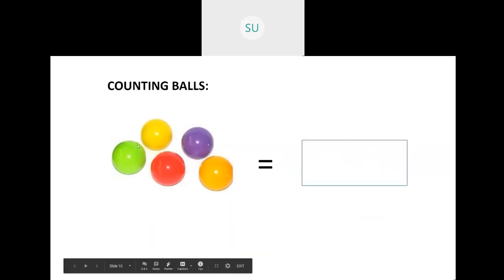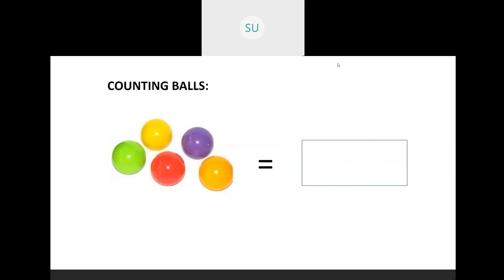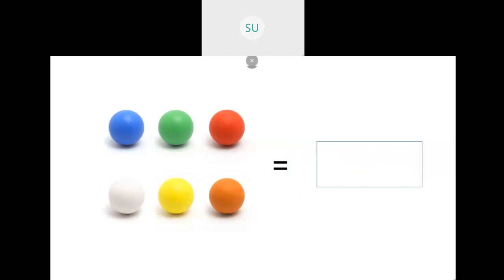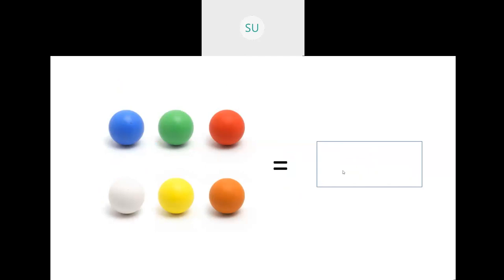Then balls — how many balls are there here? 1, 2, 3, 4 and 5. So 5. Then again here we have 1, 2, 3, 4, 5 and 6. So there are 6 balls. This is how you count using numbers.